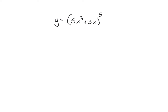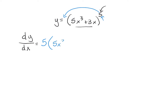We have a power function with a polynomial inside. To take the derivative, think about the power rule: the 5 comes down in front, and we subtract 1 from the exponent. So we get 5 times (5x³ + 3x) to the fourth, and then we multiply by the derivative of the inside, which is 15x squared plus 3. We'll leave it there without simplifying.